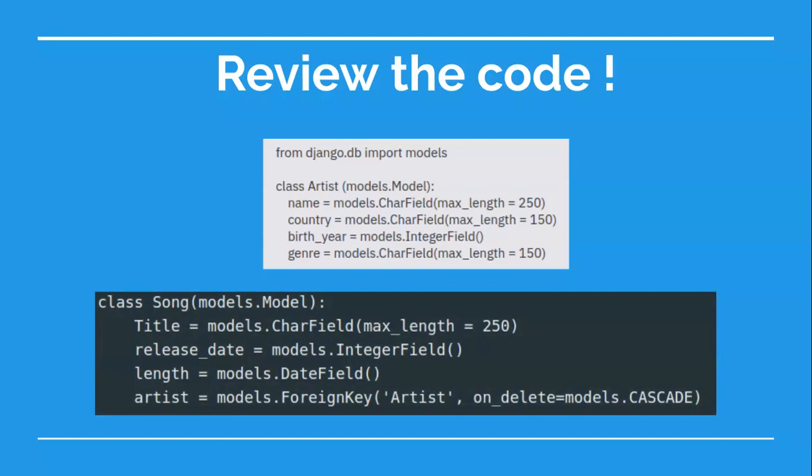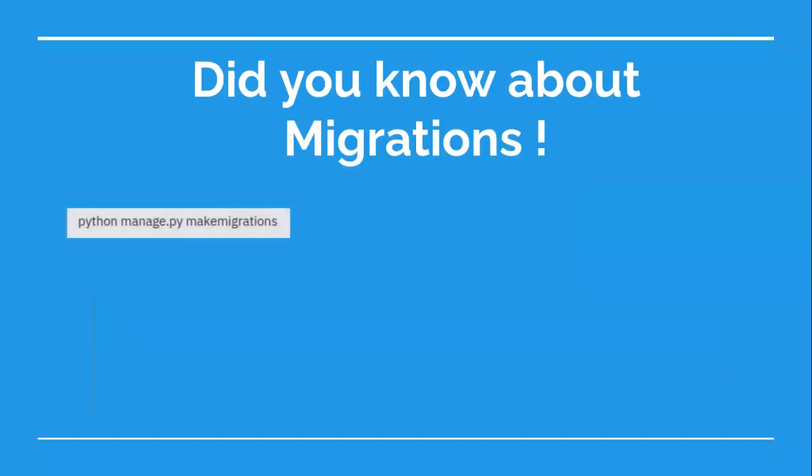What are migrations? When we add a model to our models.py file, nothing actually happens until we tell Django to check the models and apply the changes we have made to models.py. This is called migrations in Django's world. By migrating our models, we make sure that the model definition in models.py and the actual database are in sync. Also, every change we make to our model, like adding a new field, should also be applied to the database — migrations take care of that too.